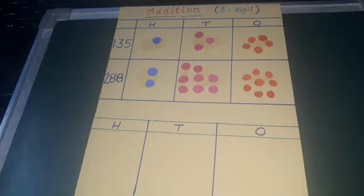Children, you can see three columns here. Ones, tens and hundreds.